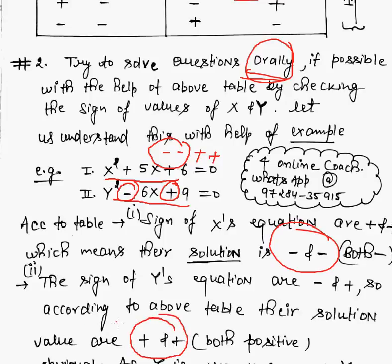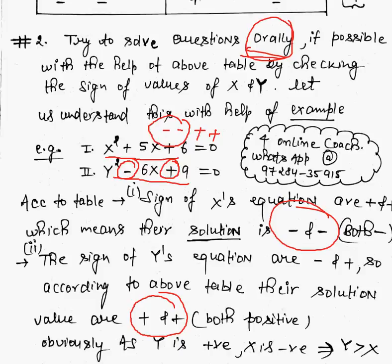It is very much obvious that plus is always greater than minus, so we can say that y is greater than x. By not solving anything, by not getting any value, just by the signs, we can judge that y is greater than x. That's it.